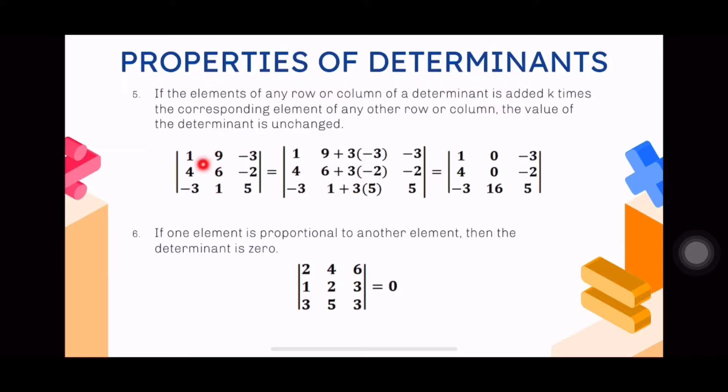Based on this example, let's say this column - nine, six, one - is added a scalar times, like two times, three times, four times - k times the corresponding element of any other row or column. The determinant value won't change. What happened here? The second column, nine, six, and one, was added three times the corresponding element. The chosen column is the third column.